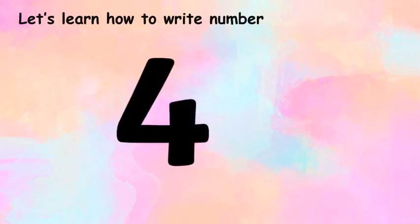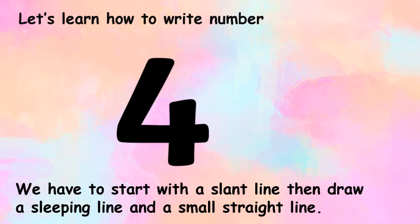Kids, you all know how to count up to number 4, right? So, now it's the time to learn how to write number 4. What is this number? This is number 4. When you are writing number 4, you have to start with a slant line. Then draw a sleeping line and a small straight line. Now, I will write and show you. As I told you all, first we have to start with a slant line. Then draw a sleeping line and a small straight line. Did you all understand? You can take your pencil and practice this at home. Okay?